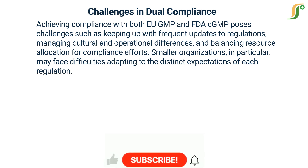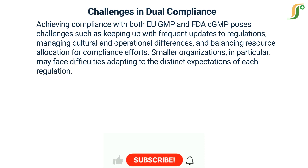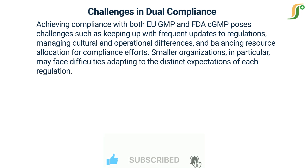While EU GMP and FDA CGMP share a common goal of ensuring pharmaceutical product quality, their differences require manufacturers to tailor their processes for dual compliance. By implementing harmonized quality systems, adopting risk-based approaches, and leveraging expert insights, companies can successfully meet the regulatory expectations of both markets, ensuring global patient safety and access to high-quality medicines.